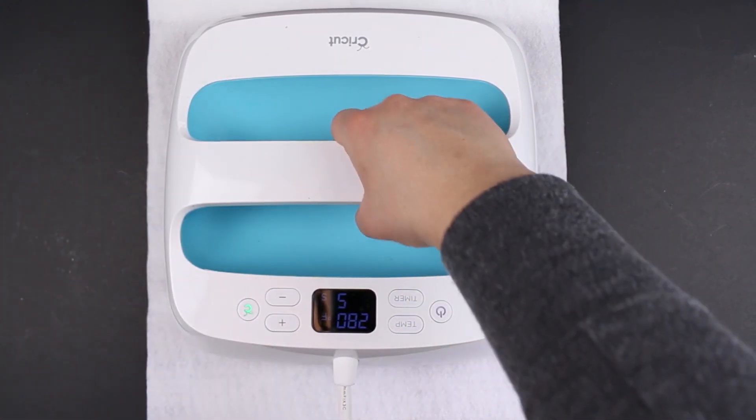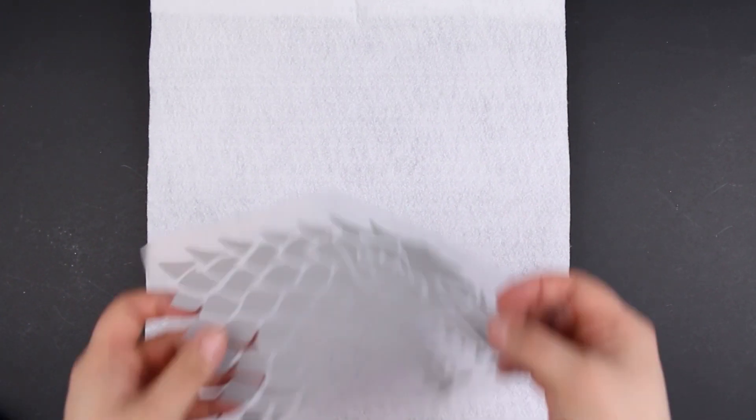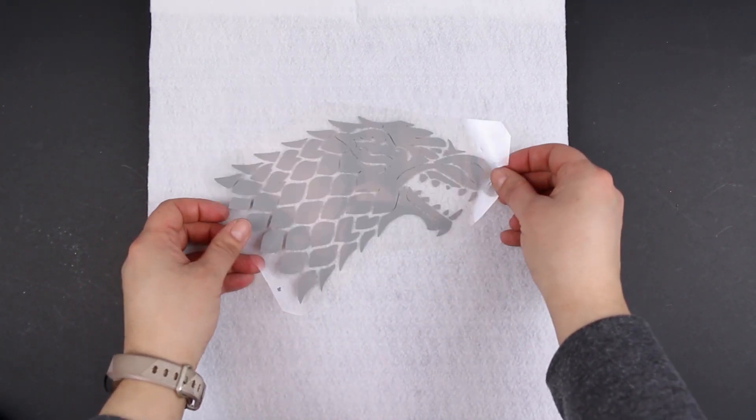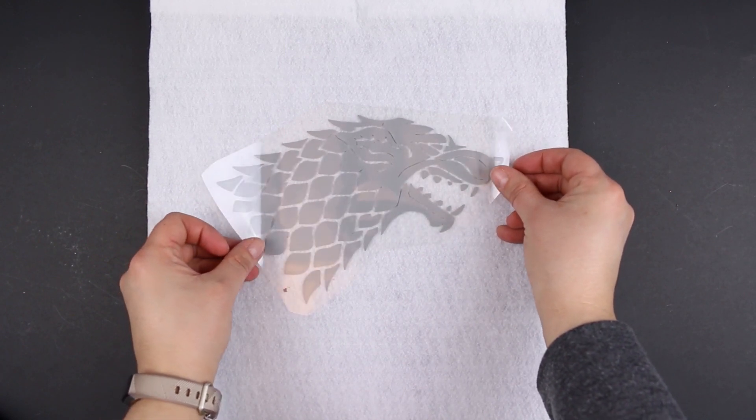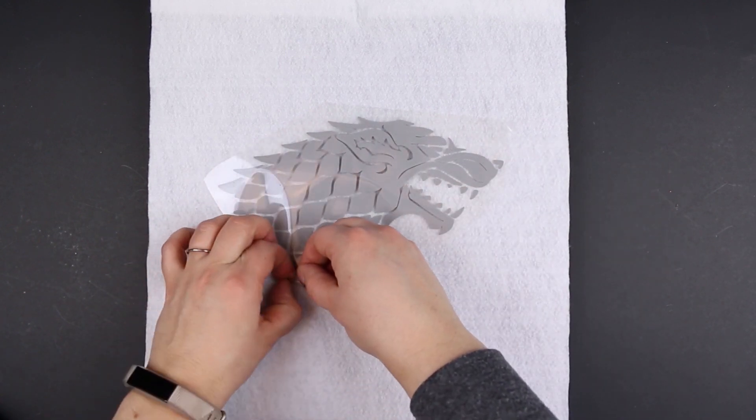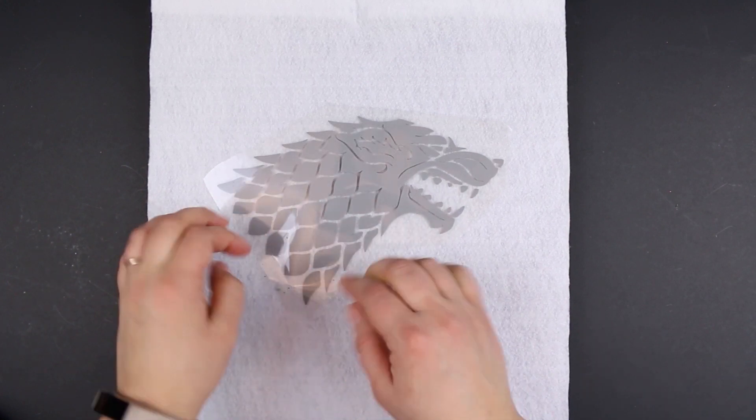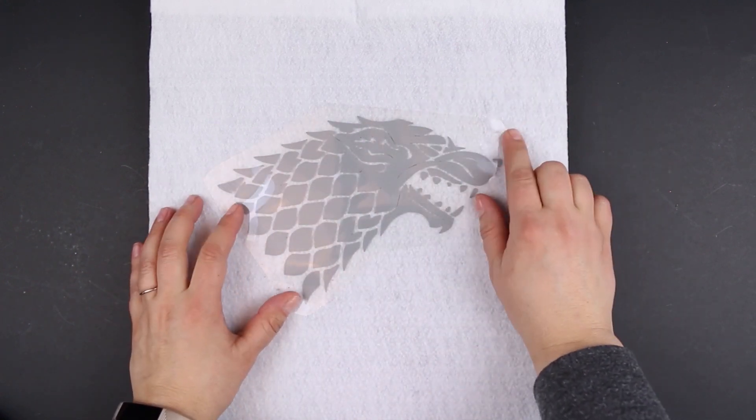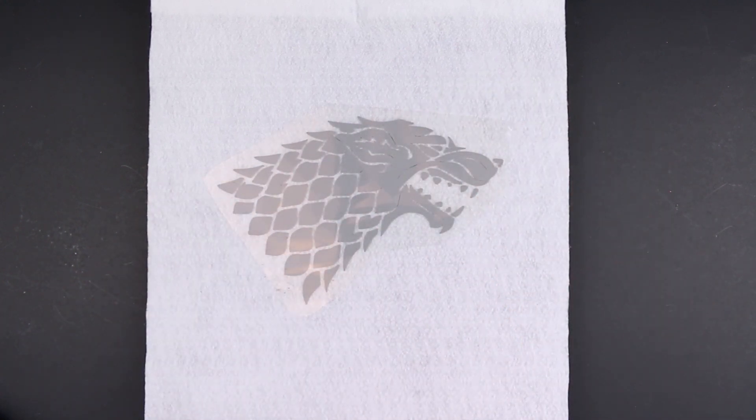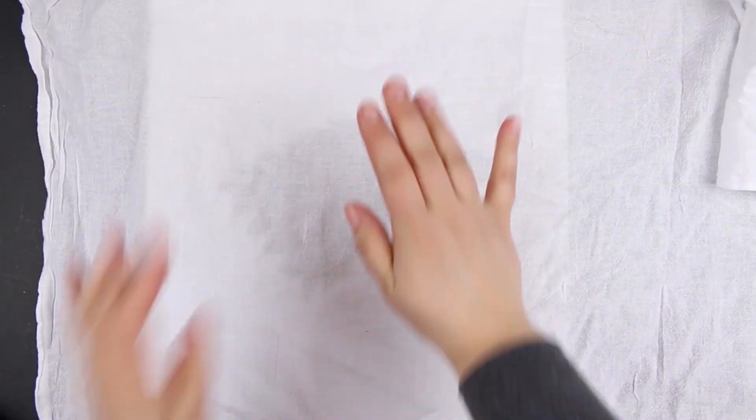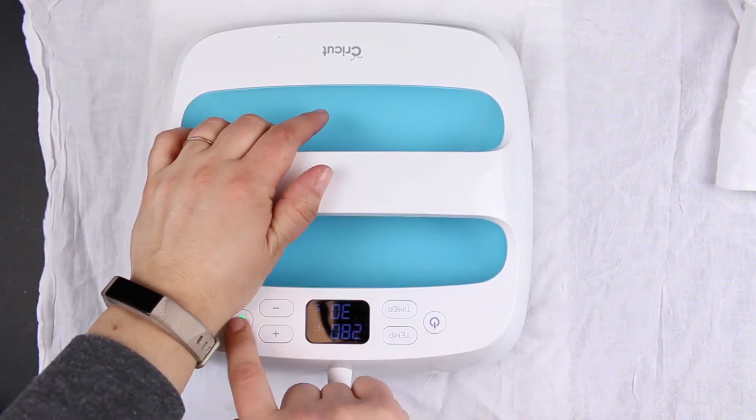First you want to preheat your felt either using your iron or using your EasyPress. After you've preheated your fabric you want to place the design where you want it to be, add a pressing cloth and then heat the vinyl according to either your heat settings for your EasyPress or the iron directions that come with your packet of heat transfer vinyl.